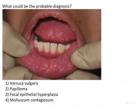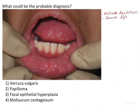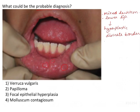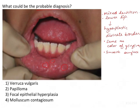What could be the probable diagnosis? Here we have a young adult or maybe a child. This looks like a mixed-dentition phase because the mamelons are prominent. Secondly, we see lesions on the lower lip. These are hyperplastic lesions with a discrete border — each lesion is discrete. They are the same color as the gingiva and have a smooth surface. These are the findings we can correlate from the image, and based on this appearance we need to identify the condition.